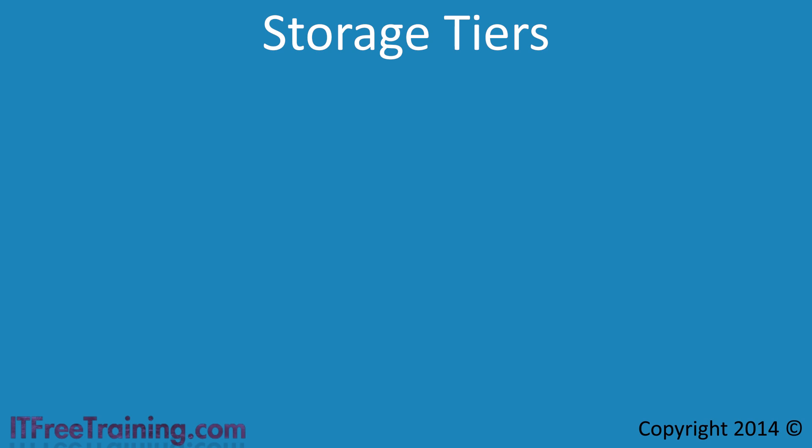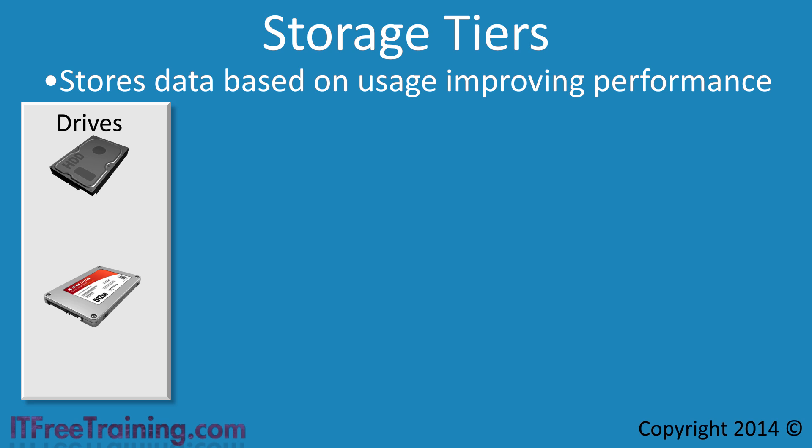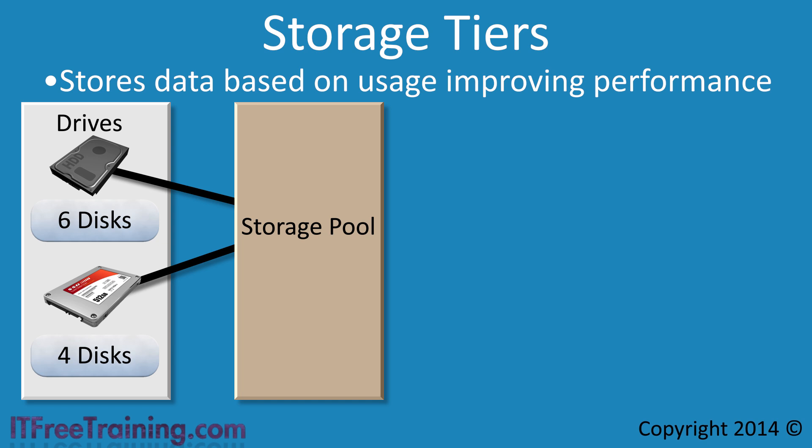The first feature I will look at is storage tiers. Storage tiers store data that is accessed more often on solid state drives and less used data on traditional hard drives. By using a mixture of solid state and hard drives, this can significantly improve access times. In this example, I have a number of hard drives and solid state drives connected to the system — there are 6 hard drives and 4 solid state drives. All these drives are combined together using Windows Storage Spaces in a single storage pool.